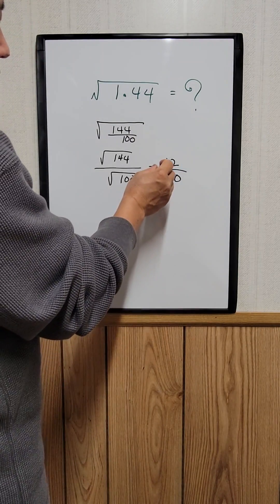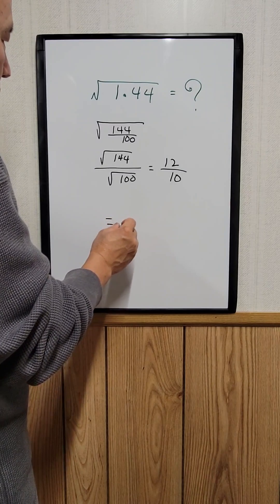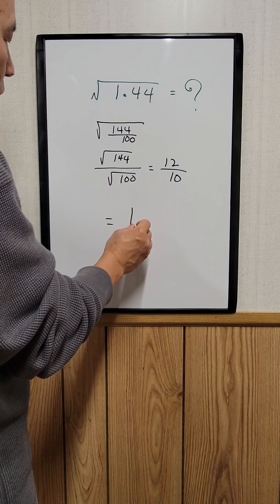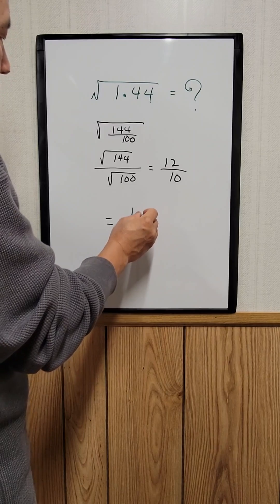If you take 12 divided by 10, it equals 1.2. That's your answer.